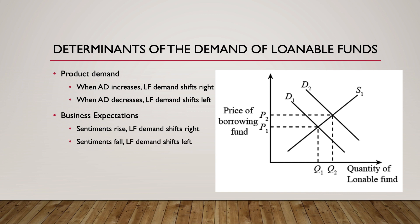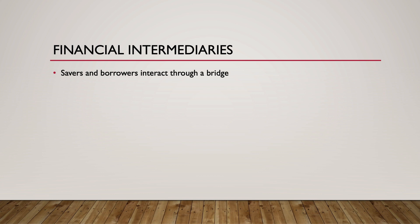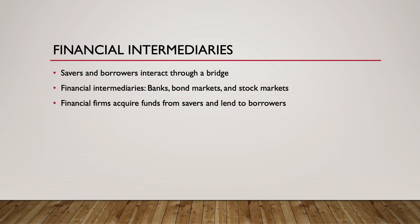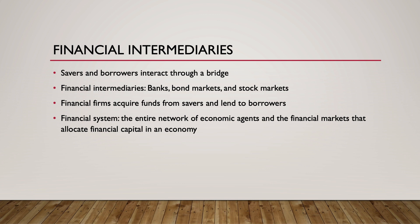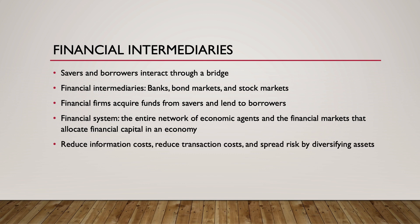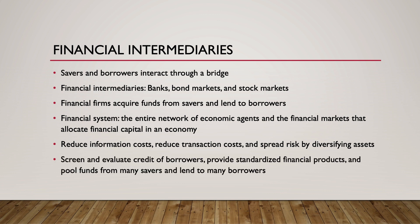When firms' sentiments fall, investment demand decreases, and so does the demand for loanable funds. Instead of savers and borrowers interacting directly, they interact through a bridge — a complex set of financial institutions like banks, bond markets, and stock markets — called financial intermediaries. These financial intermediaries acquire funds from savers and then lend these funds to borrowers, consumers, firms, and governments. The entire network of economic agents and the allocation of financial capital in an economy is referred to as the financial system. Financial institutions fulfill three important roles: they reduce information costs, reduce transaction costs, and spread risk by diversifying assets. Financial institutions screen and evaluate the credit of potential borrowers, provide standardized financial products or instruments, and pool funds from many savers and lend to many borrowers.